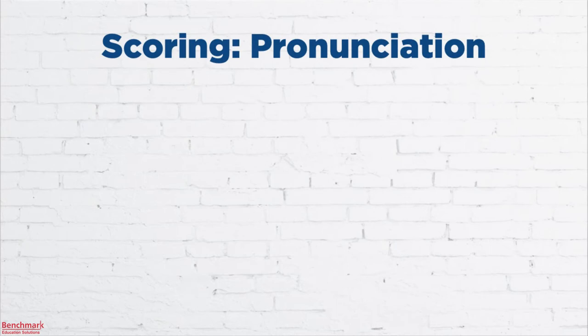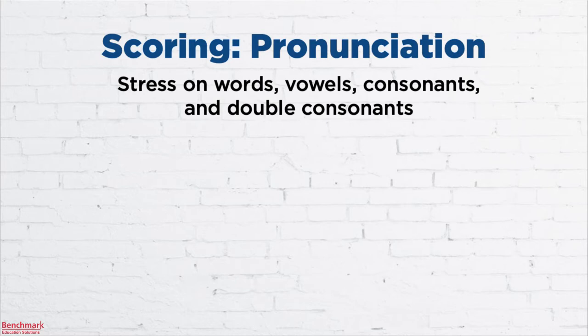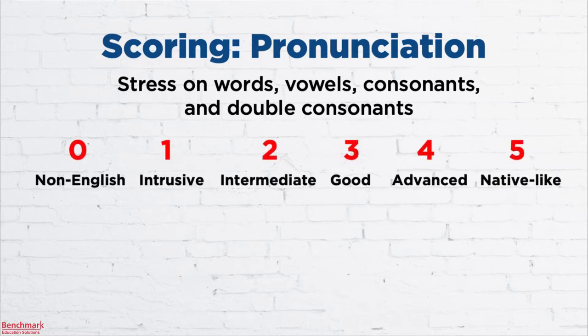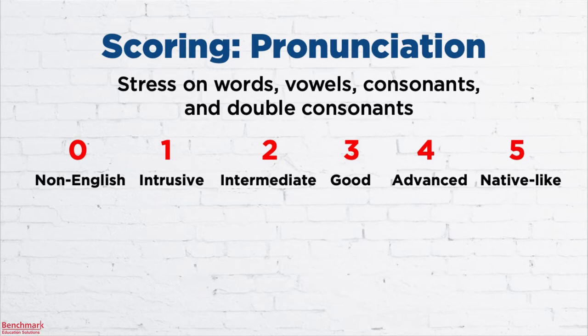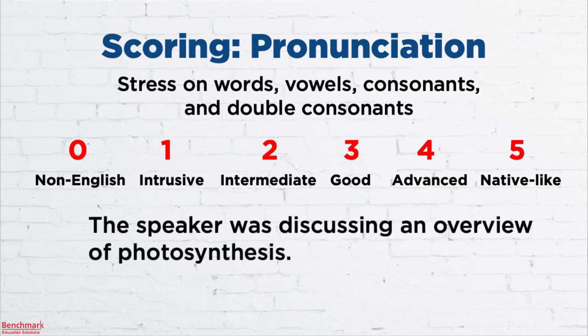Next up is pronunciation. This involves the stress you place on words and how you pronounce your vowels, consonants, and double consonants. You'll be scored on a scale from 0 to 5 — 0 being non-English and 5 being native-like. For example, the speaker was discussing an overview of photosynthesis. Notice the correct stress on that word. If you were to pronounce it as 'photosynthesis' with incorrect stress or pronouncing vowels incorrectly, this would negatively affect your pronunciation score.